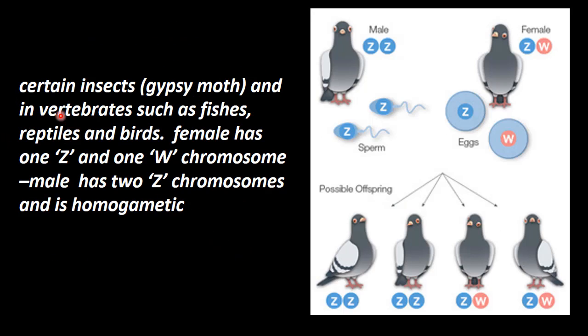There is another condition in certain insects, example gypsy moth, and in vertebrates such as fishes, reptiles, and birds. Females have one Z and one W chromosome, making them heteromorphic or heterogametic. Males have two Z chromosomes, making them homomorphic or homogametic production, producing sperm with Z chromosomes.